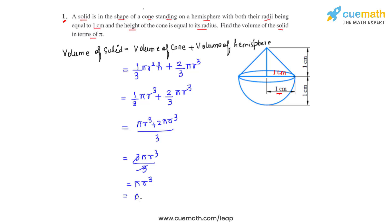Now with r equal to 1, the cube of 1 is 1. So we get the answer as π centimeter cubed as the volume of the solid formed as a combination of a cone standing on a hemisphere.